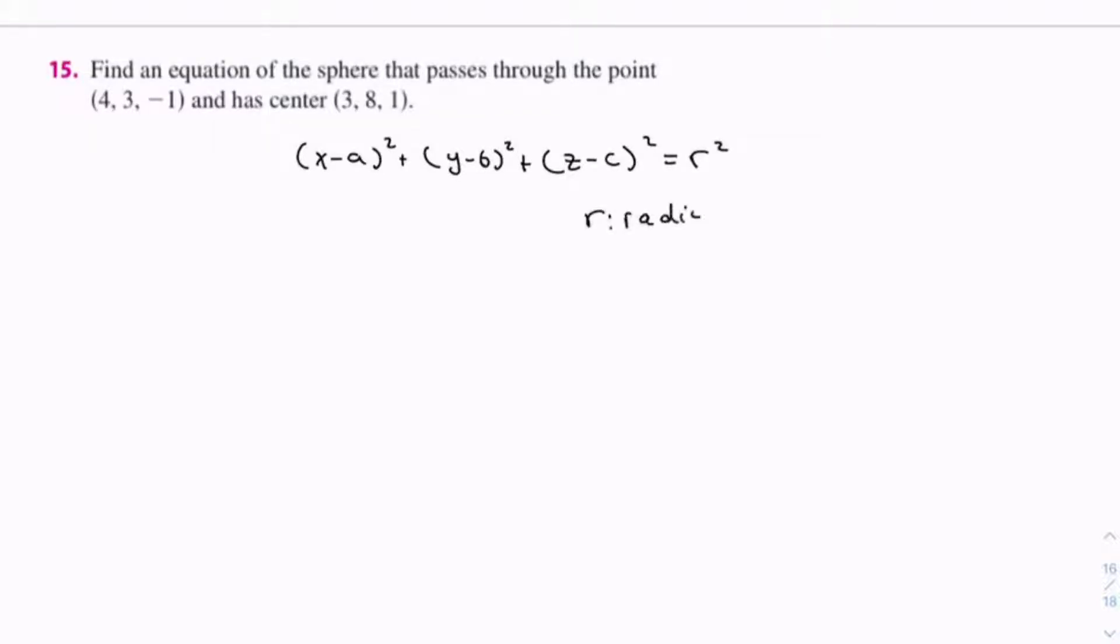Let's remember the formula of the sphere: (x-a)² + (y-b)² + (z-c)² = r², where r is the radius and the center point is (a, b, c).